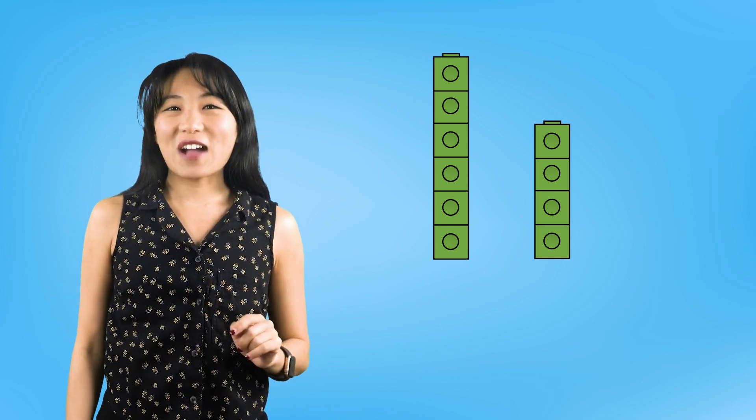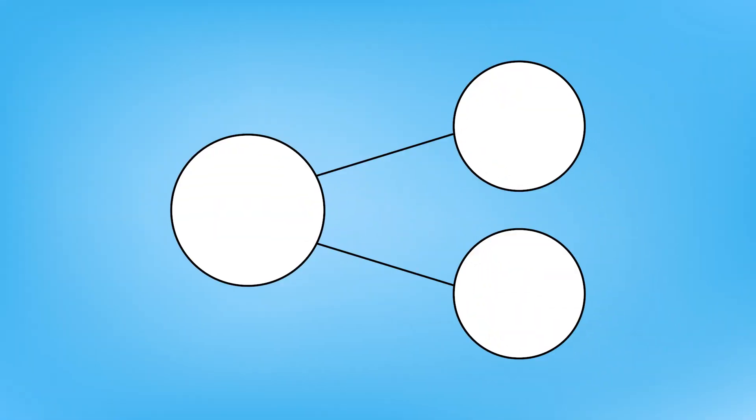Let me show you another way we can show how these numbers work together. This is called a number bond. With a number bond, we can show how numbers work together in their parts to make a whole. We know that my tower of cubes is made up of 10 cubes in all. That means the whole is 10.